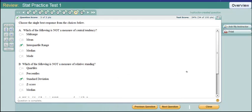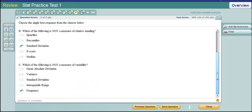Which of these is not a measure of central tendency? Well mid-range, mean, median, mode are measures of central tendency. Interquartile range is a measure of variability. Which is not a measure relative standing, that would be standard deviation, which is a measure of variability. Quartiles, percentile, z-score, and median are all measures of relative standing. Which is not a measure of variability. Frequency is not a measure of variability. It's just a measure of size.